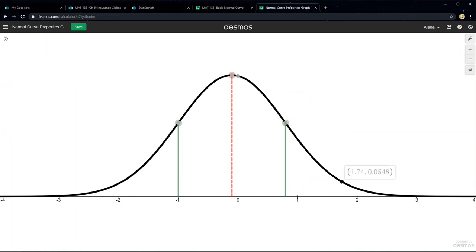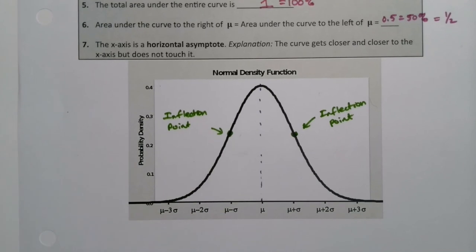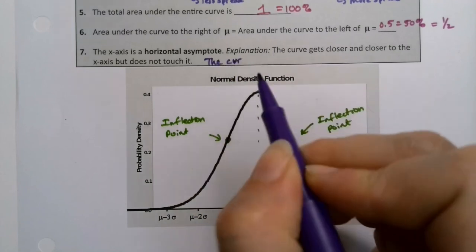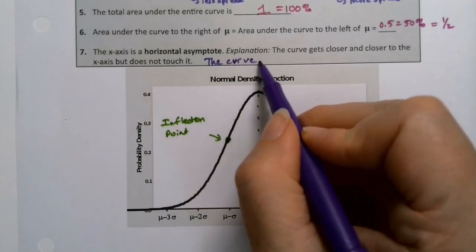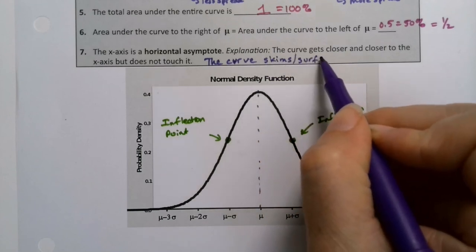When you're drawing these by hand, which you will eventually have to draw them by hand, you never want to cross the x-axis over here. You want to make it have a nice little tail and kind of skim along that x-axis right there. So the curve, I sometimes say it surfs along it, right? Like a surfboard.